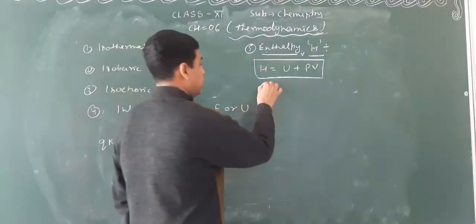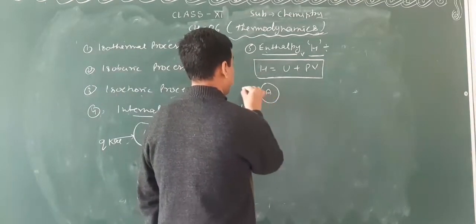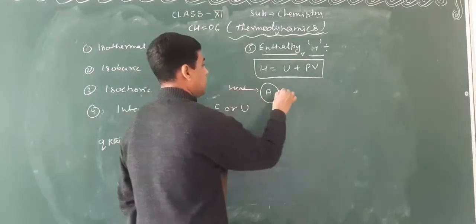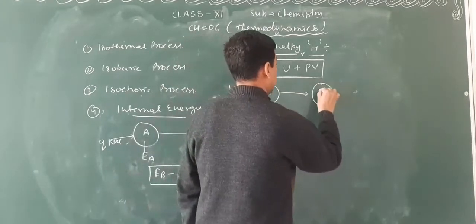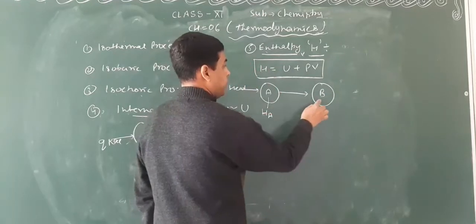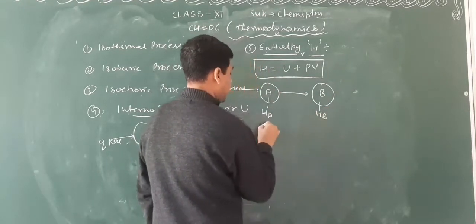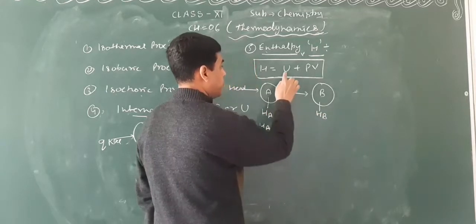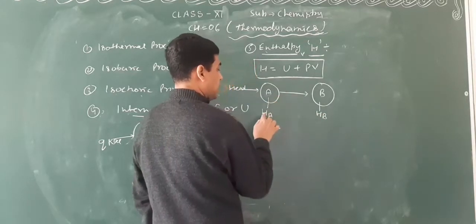Now, this is system A. Heat has been absorbed by system A, and this system B will be transferred. How will it affect us? A has internal energy. So it affects us, and this is the state.